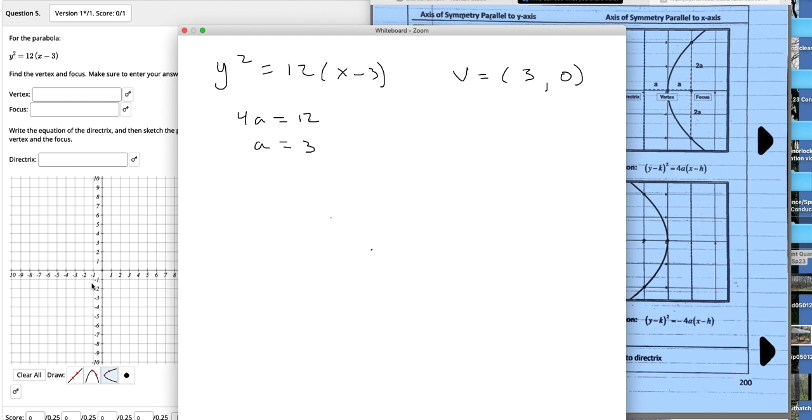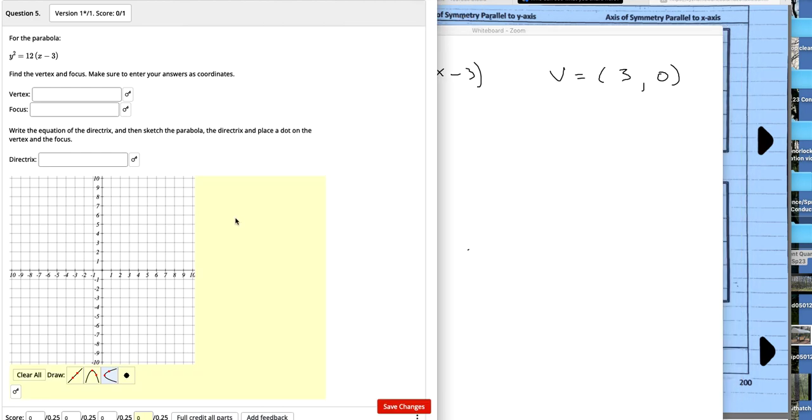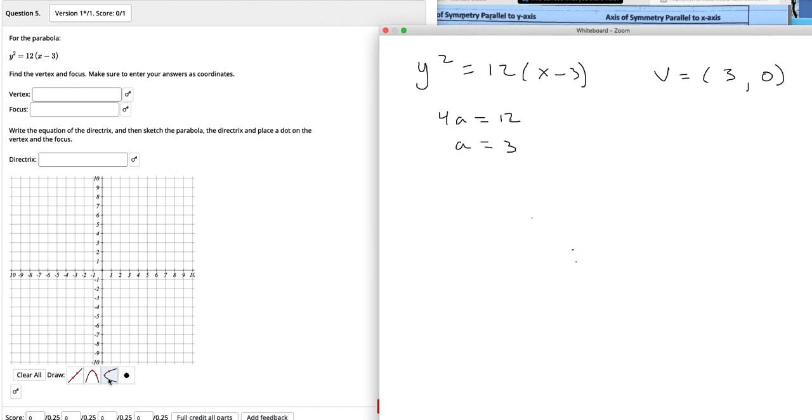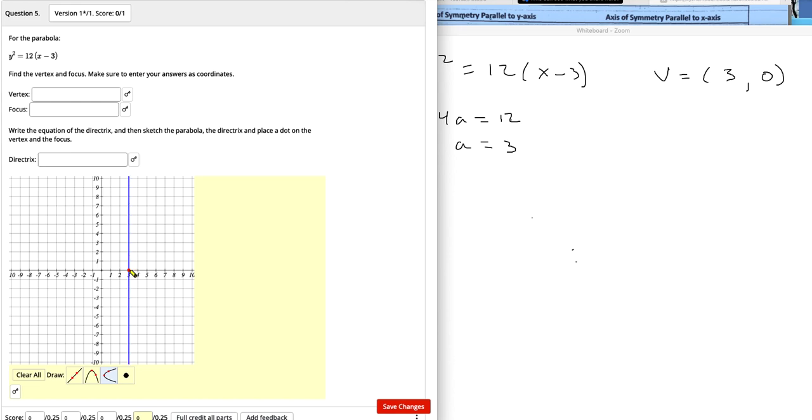So then to find the rest of it, I would draw it and read it off the graph because I think graphing these is way more helpful. So let's see. We know the vertex is there and we know a is 3. So we're going to have this one and the vertex is at x is 3, y is 0.